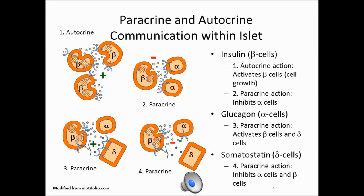Apart from the endocrine action of glucagon, insulin, and somatostatin, all three hormones also act in a paracrine and autocrine fashion. Insulin in an autocrine fashion activates beta cells and that leads to cell growth. In a paracrine fashion it inhibits the glucagon-secreting alpha cells. Glucagon, which is secreted from alpha cells, in a paracrine action activates beta cells and delta cells. And somatostatin, which is secreted from delta cells in a paracrine action, inhibits both alpha cells and beta cells.